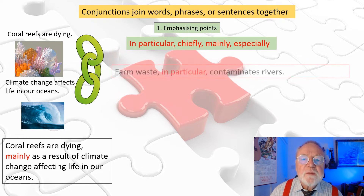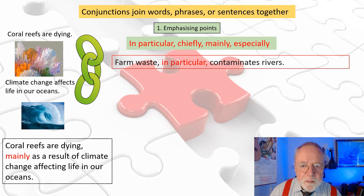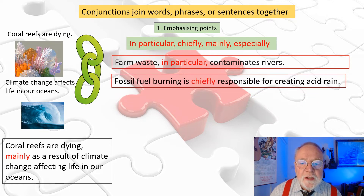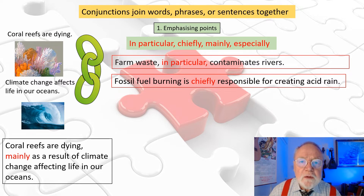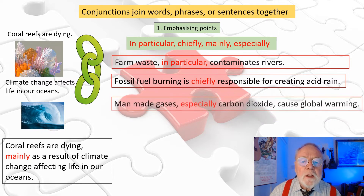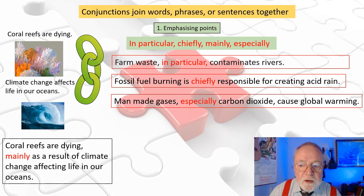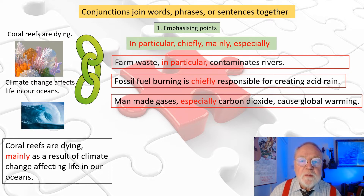Here are some other examples to help you. 'Farm waste, in particular, contaminates rivers.' Notice the comma before and after the phrase. 'Fossil fuel burning is chiefly responsible for creating acid rain.' We don't need a comma there. 'Man-made gases, especially carbon dioxide, cause global warming.' Because I've drawn attention to a phrase, I've used commas before and after. These are nicely interchangeable and will get you good marks with an examiner for your IELTS exam.